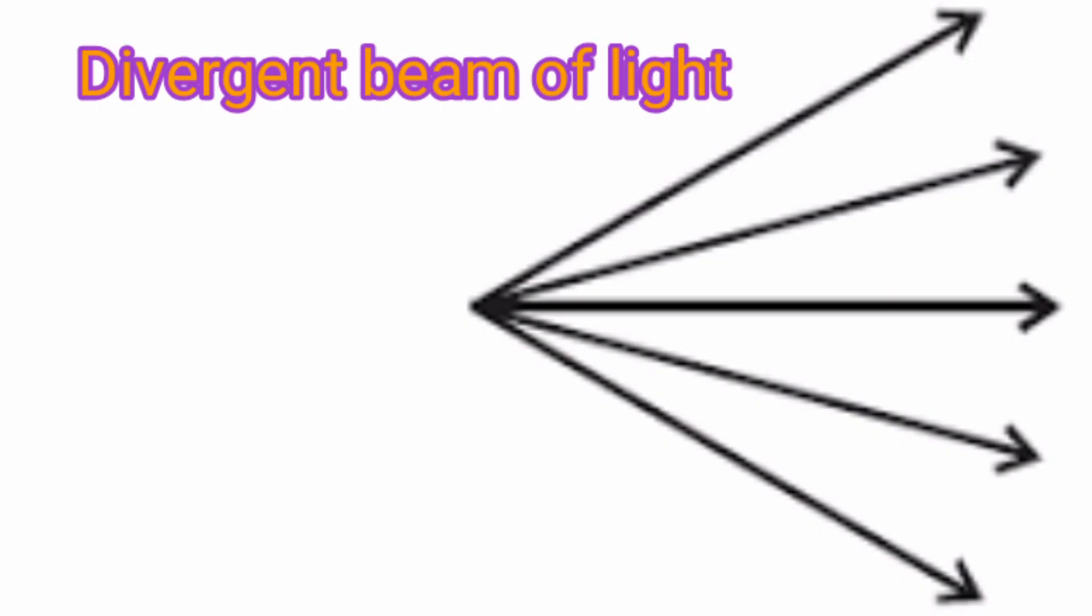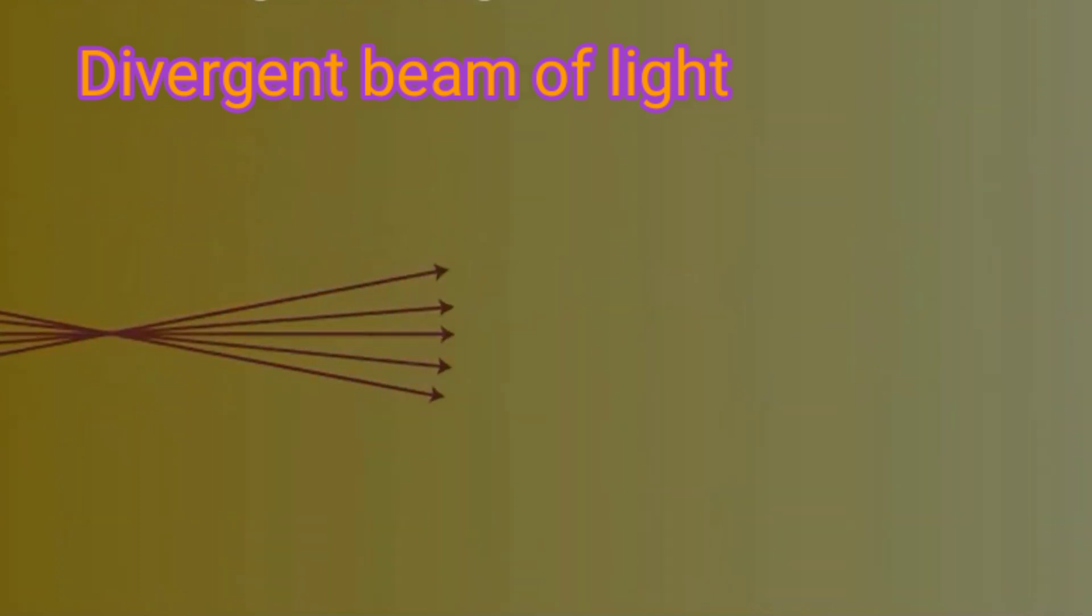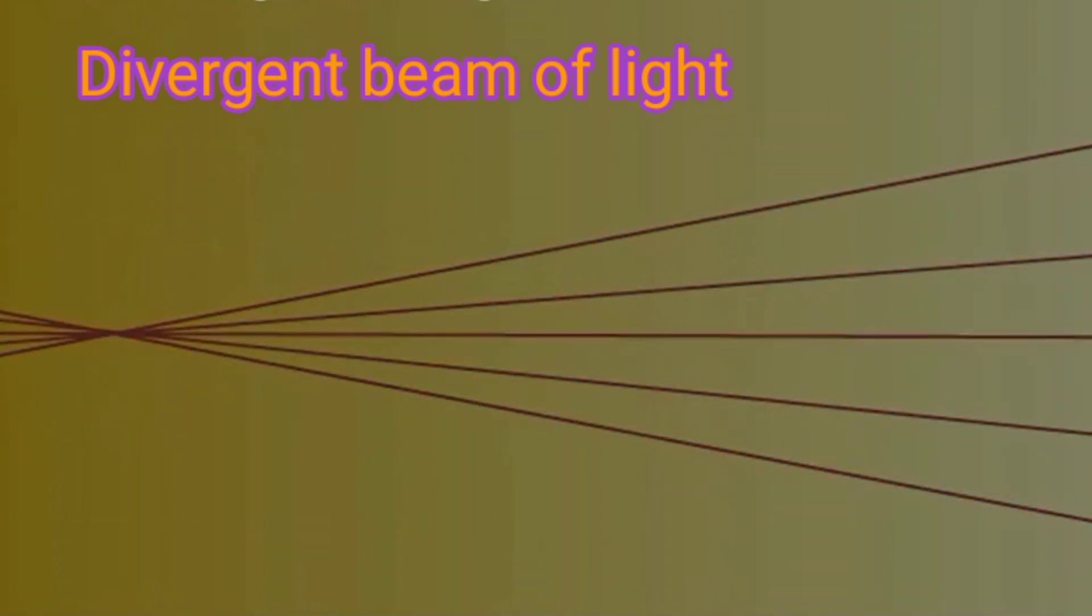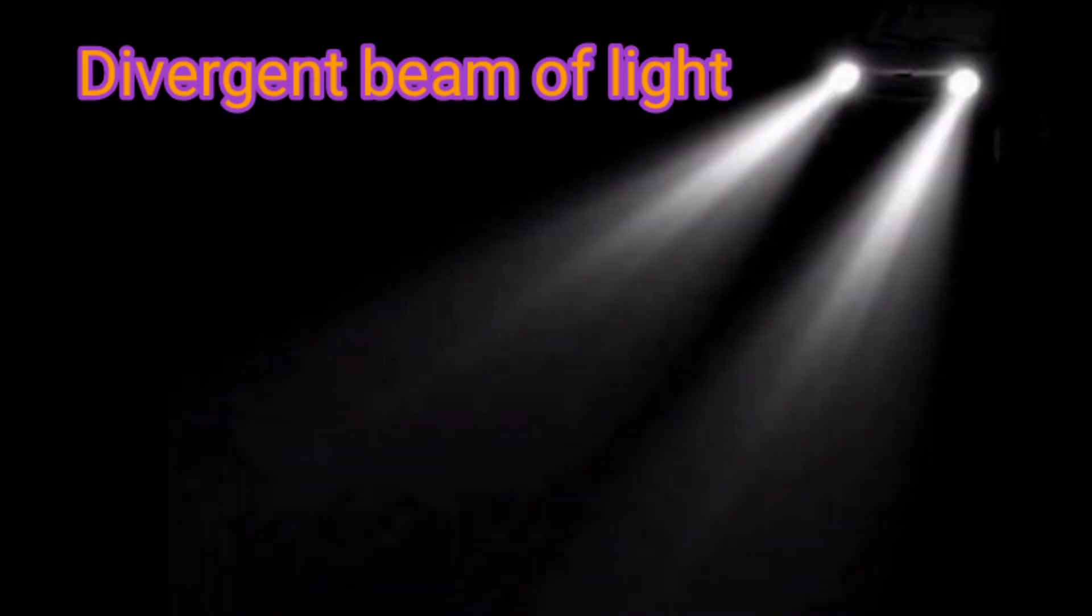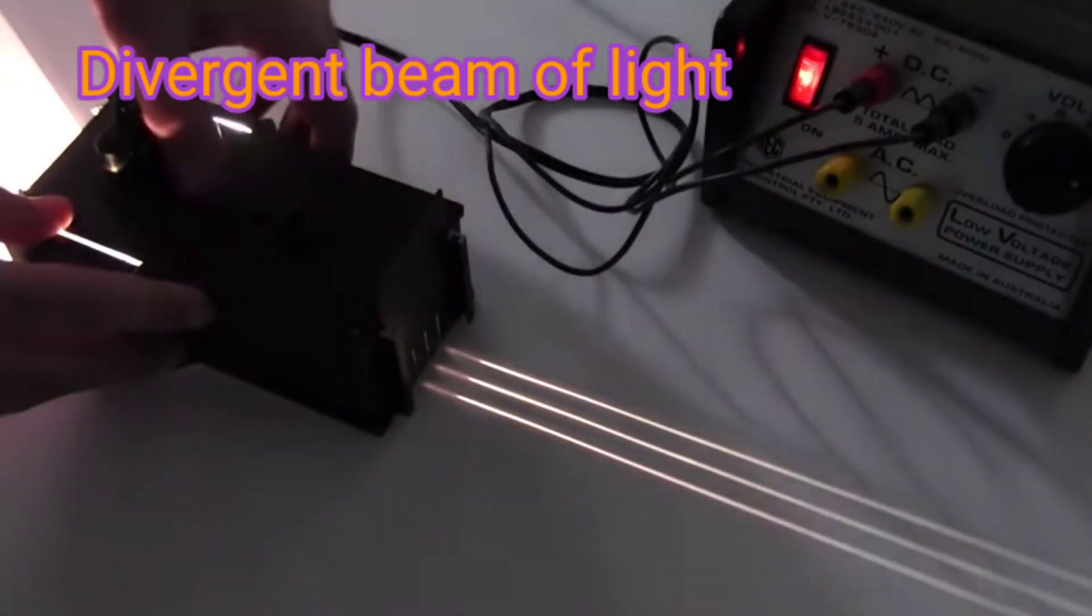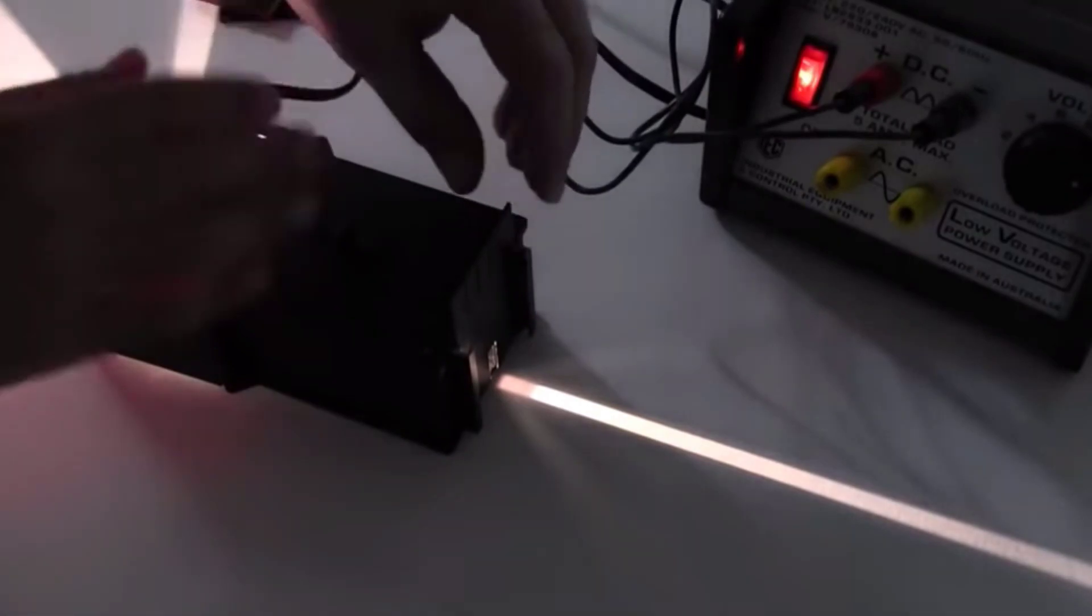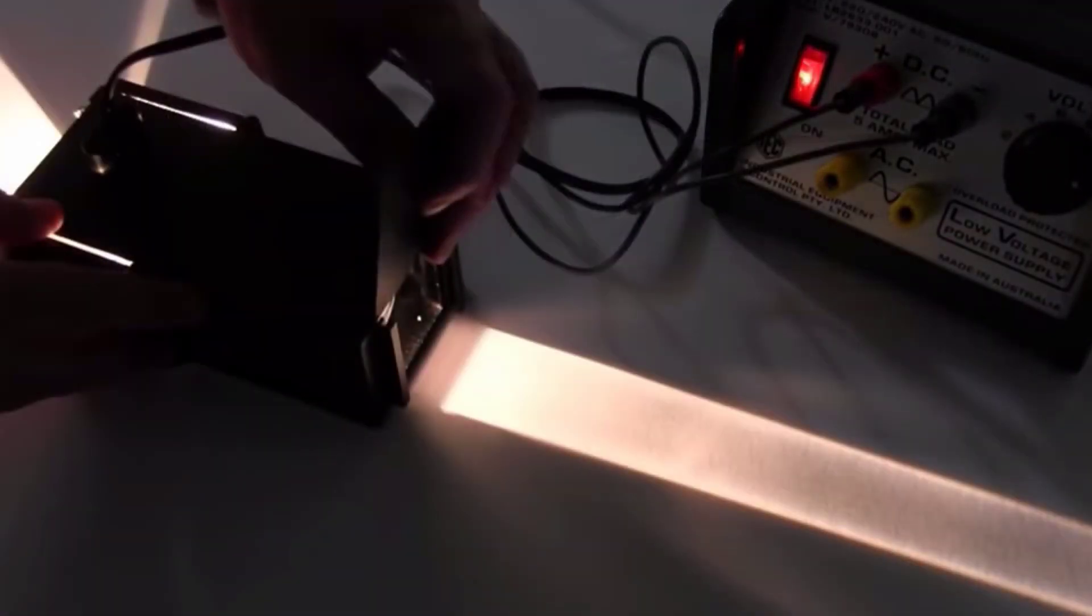Divergent beam of light: when the rays of light starting from a point travel in various directions, the collection of such rays is called a divergent beam of light. The distance between the rays goes on increasing. Example: light rays coming out from the headlight of a car.